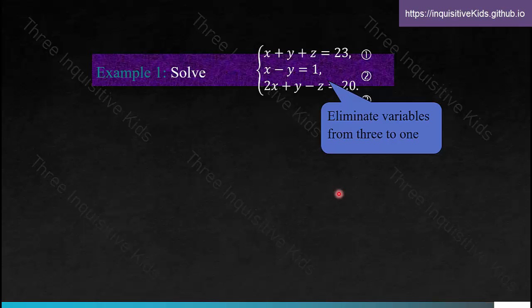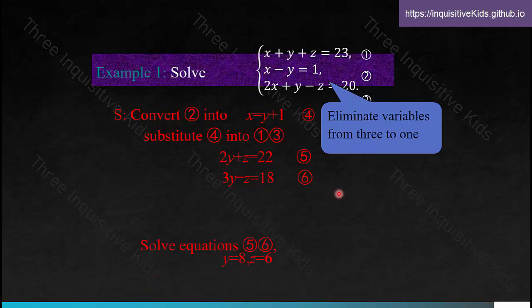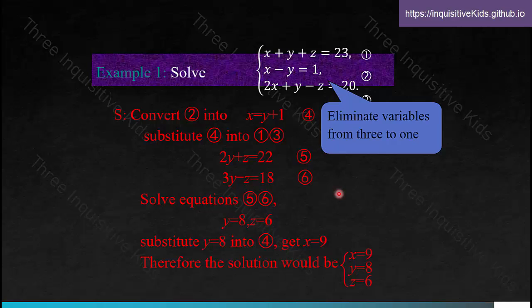Our goal is to eliminate from three variables down to one. First, we convert equation two into x equals y plus 1, calling this equation four. We substitute equation four into equations one and three to obtain equations five and six: 2y plus z equals 22, and 3y minus z equals 18. Solving equations five and six gives y equals 8 and z equals 6. Substituting these values back gives x equals 9. Therefore, the solution is x equals 9, y equals 8, z equals 6. The solution process isn't much different — there are just more repetitive steps because there are more variables.